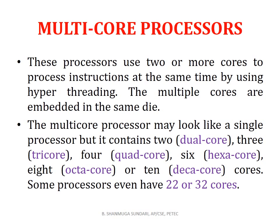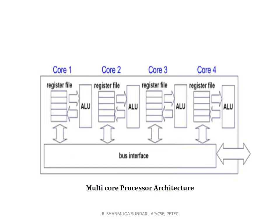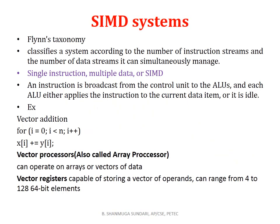Multi-core processors use two or more cores to process instructions at the same time using hyper-threading. The types include dual core, tri-core, quad core, hexa core, octa, and deca. The octa diagram represents the multi-core processor which has more than one core. Communication is performed between them via the bus interface.